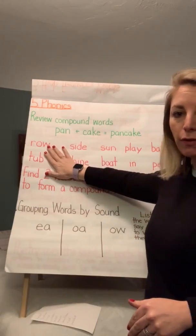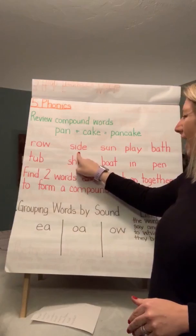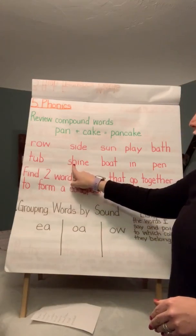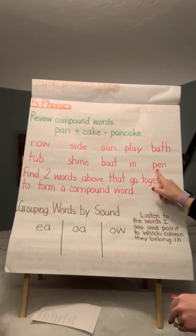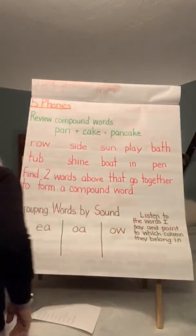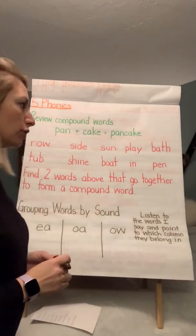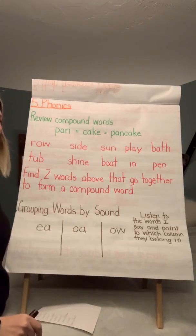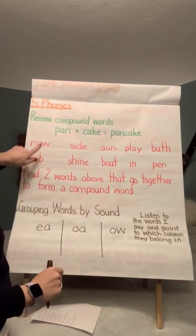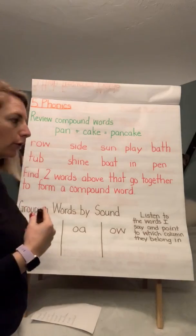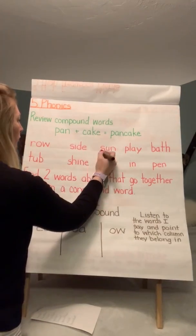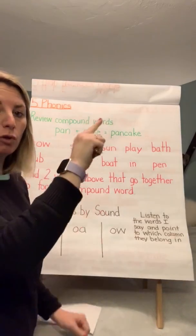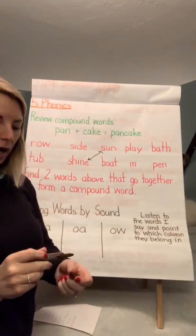We're going to read them: row, side, sun, play, bath, tub, shine, boat, pen. Find two words above that go together to form a compound word. You're going to pick two of these words. I'll do one for you — sun, shine: sunshine. You can get a piece of paper and write them, or just move your finger on the screen. Try to figure out how they go together.